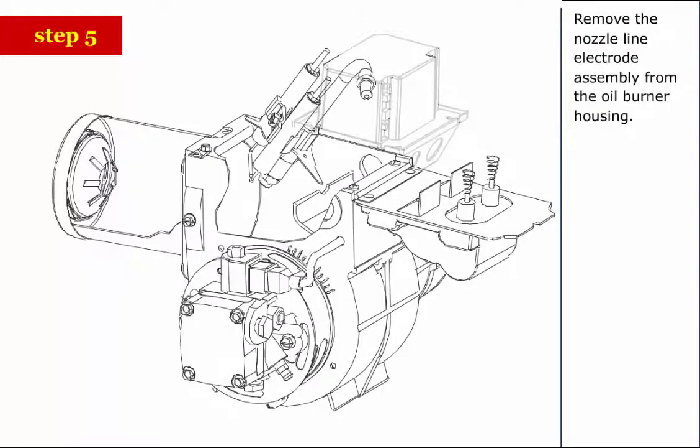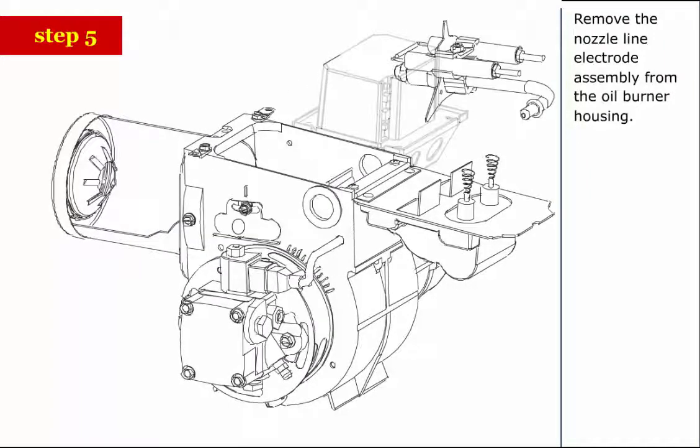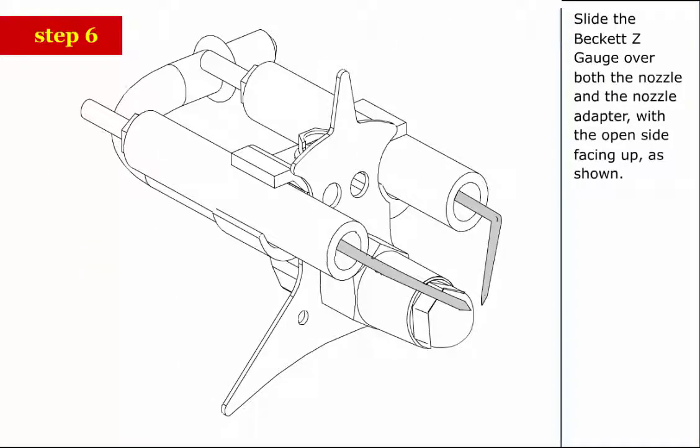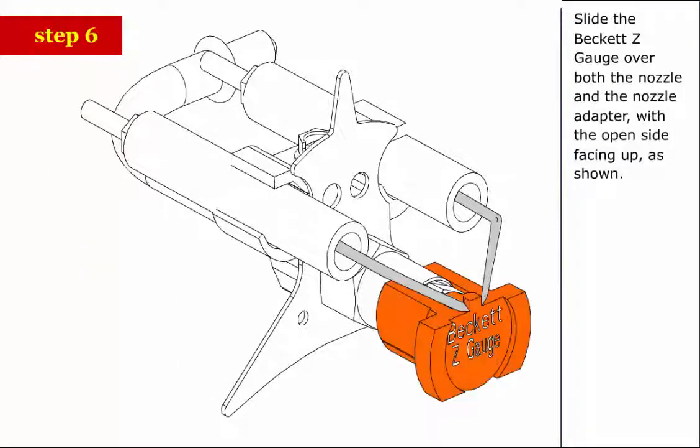Step 5: Remove the nozzle line electrode assembly from the oil burner housing. Step 6: Slide the Beckett Z gauge over both the nozzle and the nozzle adapter with the open side facing up as shown.